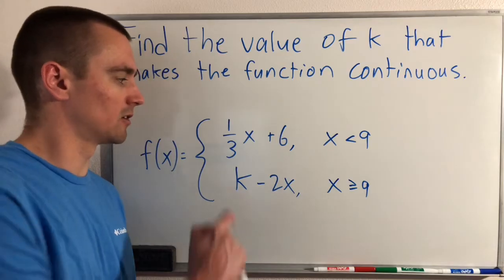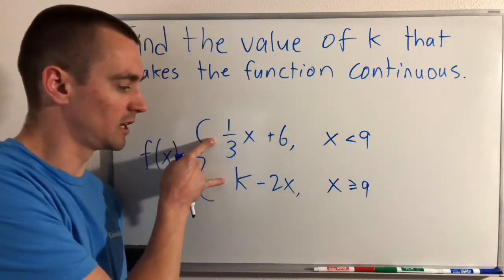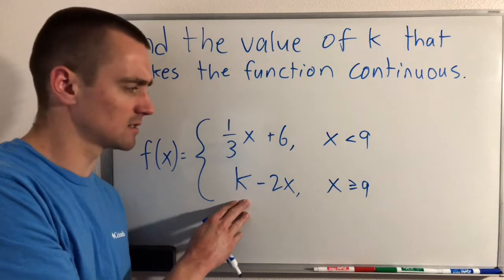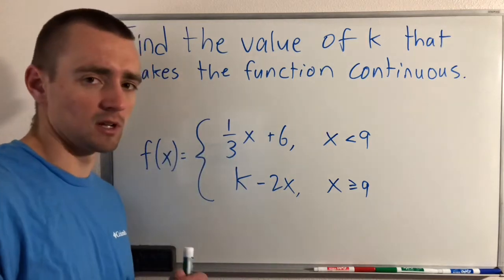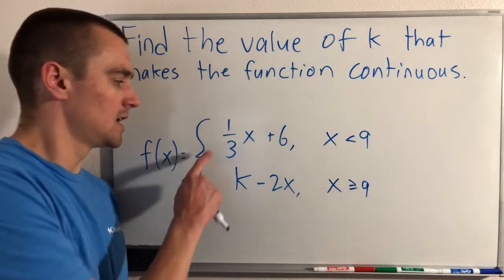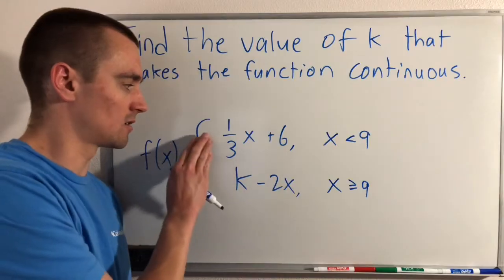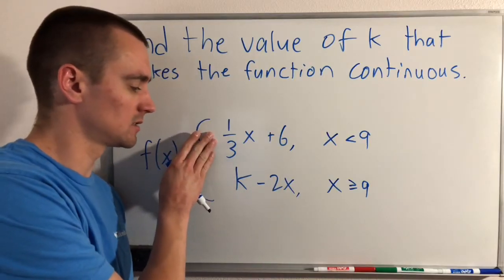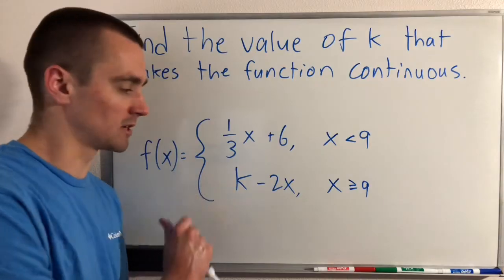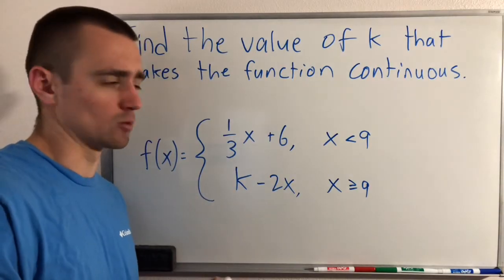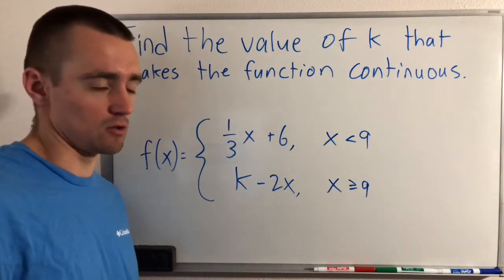You can see just by looking at this, both of these are going to be linear functions. Regardless of what our constant k is, a linear function is continuous everywhere. So if we had y equals one-third x plus six and y equals k minus 2x, both functions would be continuous for any x value you put in there.